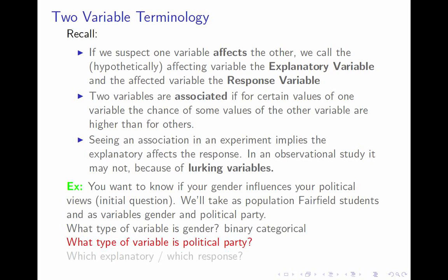What type of variable is political party? It's a categorical variable. How many choices there are, whether it's binary or not, depends on how many choices you give — you could say just Democrat or Republican, making it binary. With the wording from my first-day survey, there were three choices: Democrat, Republican, Independent. One decision in study design is how many choices to give and how to lump together rare categories like the Constitution Party or Green Party so that extremely rare occurrences don't make it harder to draw conclusions.